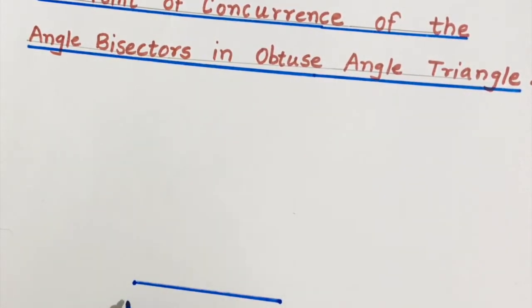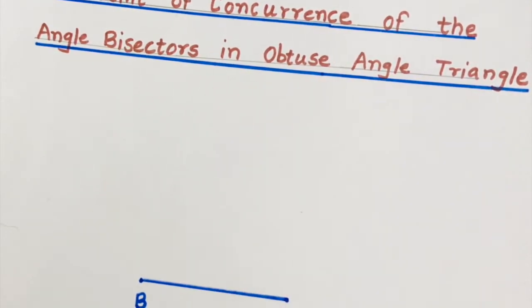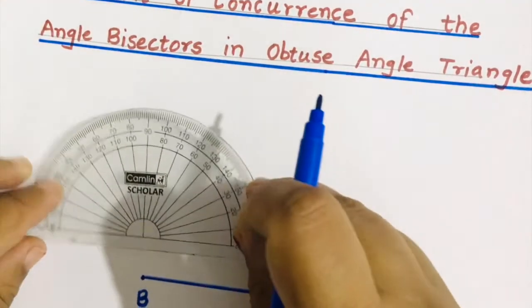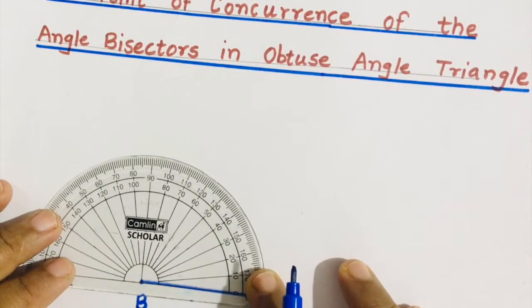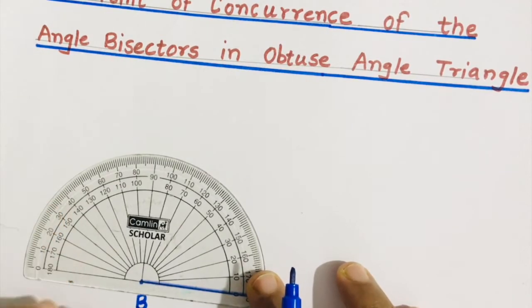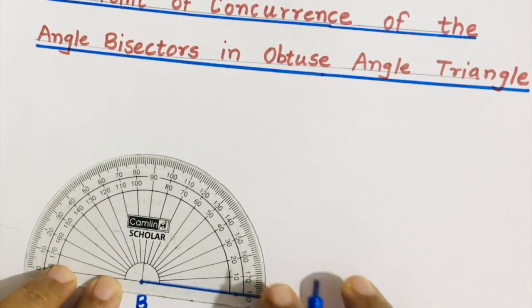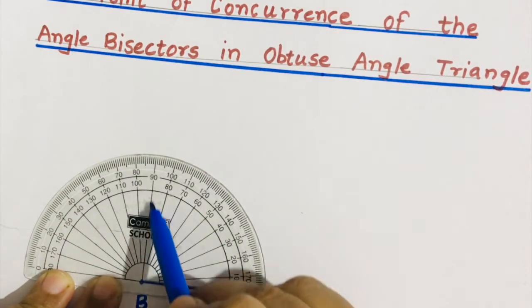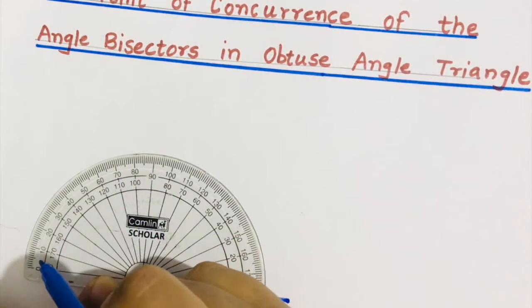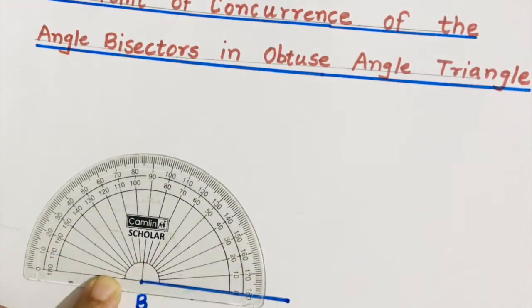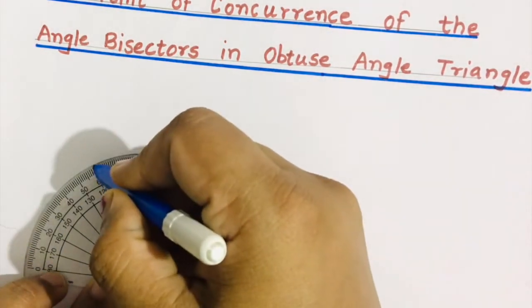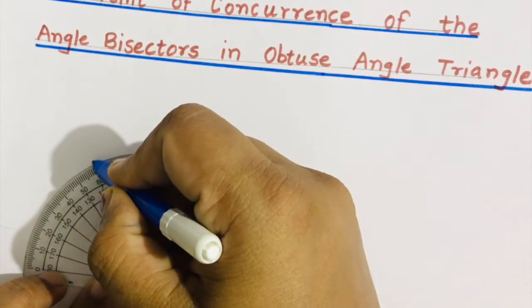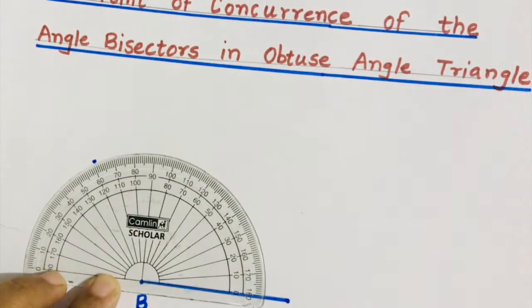This is segment BC. Keep the center of the protractor at point B. Now you need to draw an obtuse angle, so greater than 90 and less than 180 is known as obtuse angle. So we are taking one angle as greater than 90 degrees.